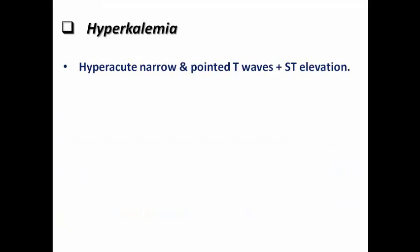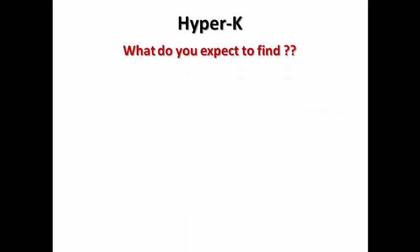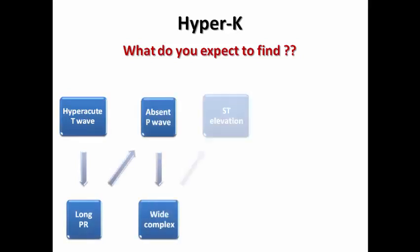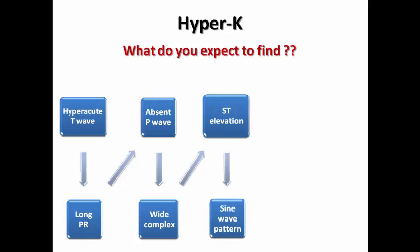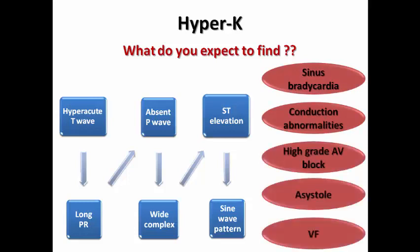Hyperkalemia is a serious and common cause of ST elevation. The ECG shows hyperacute narrow peaked T waves with ST elevation. The ECG sequence of hyperkalemia includes: peaked hyperacute T waves, low R wave, absent or flattened P wave, widened ST elevation, and in advanced stages a sine wave pattern. Patients may develop serious arrhythmias including severe sinus bradycardia, conduction abnormalities, complete AV block, or even ventricular fibrillation. These ECG criteria can guide the decision for urgent hemodialysis given the life-threatening nature of severe hyperkalemia.